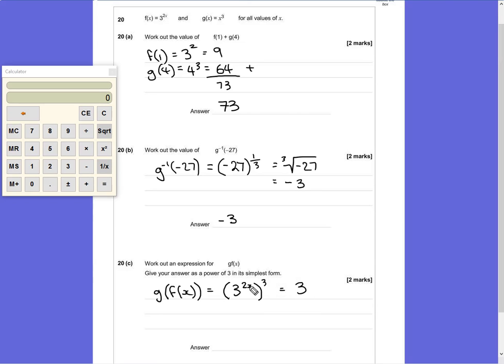So what we end up with is 3^(2x × 3), which is 6x. So our answer in simplest form is 3^(6x). If you at least manage this stage, you would still get one mark.